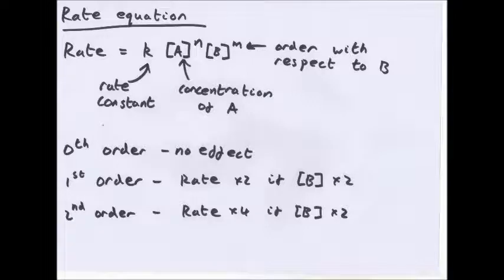The rate equation says that the rate is equal to k times the concentration of A to the power of n times the concentration of B to the power of m. Now, k is the rate constant, which you work out. The concentration is shown by square brackets of A to the power of n. Now the power is the order. In a chemical reaction, some particles have an energy greater than the activation energy. It is only these particles that have sufficient energy to react. The order with respect to the reactant is basically the effect it has on the rate.